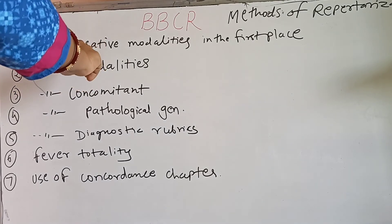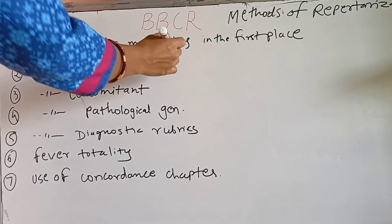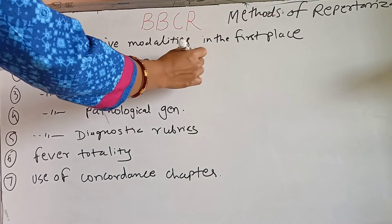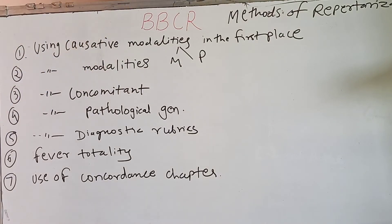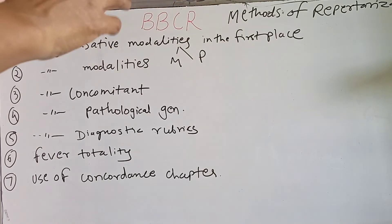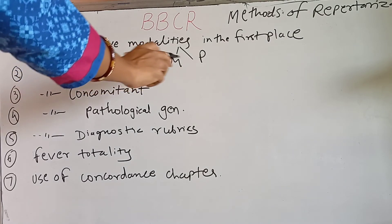Using causative modalities in the first place — causative modalities can be mental or physical, such as fear, excitement, or getting wet. If we use 'getting wet' as the causative modality, we get a group of medicines, and then we differentiate further using mental symptoms and physical generals to make the final selection of medicine.